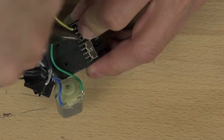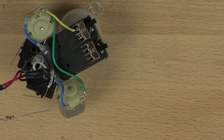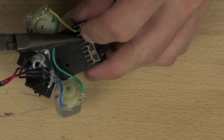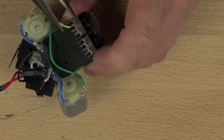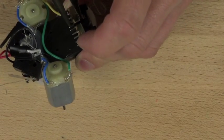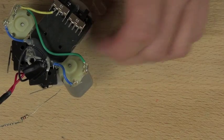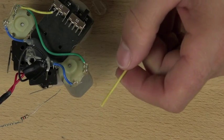So since we don't need this connection here, this pin here, we're just bending it out of the way. This pin won't be useful because all we want to do is open and close the circuit. We don't want to switch between two different circuits.